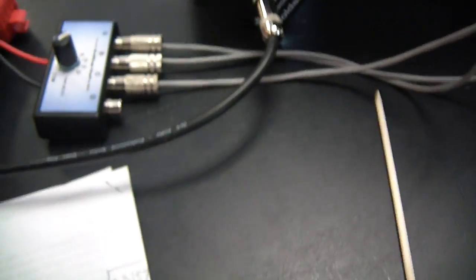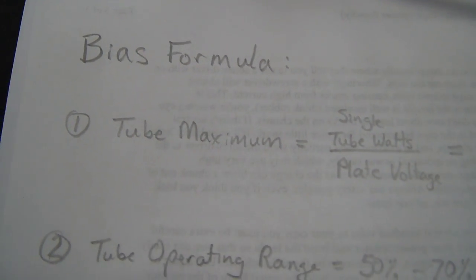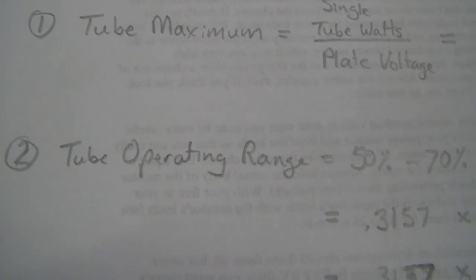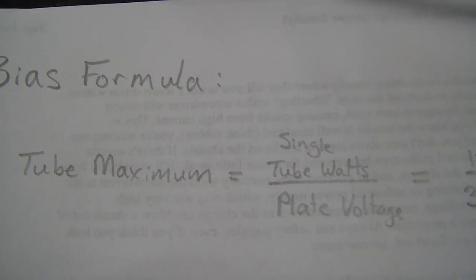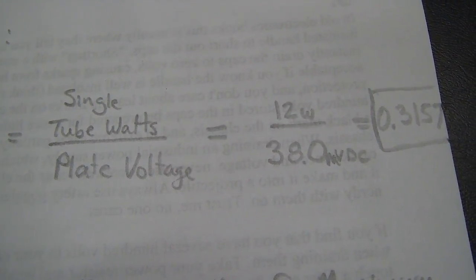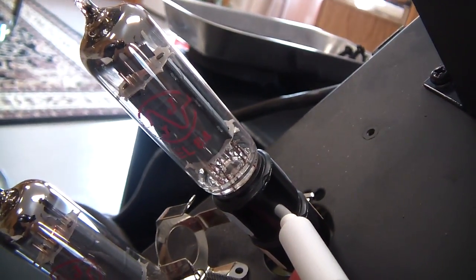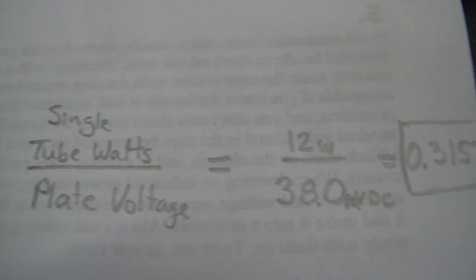All right, so the calculation for bias is this: first you want to determine your tube maximum bias setting and then based on that you'll determine your tube operating range. So to determine your tube's maximum bias setting, you use the wattage rating for the tube type. In this case I've got an EL84 and the EL84s are rated at about 12 watts each tube. And so even though I've got two tubes and that'd be around 20 watts for the amplifier,